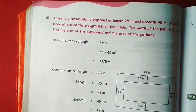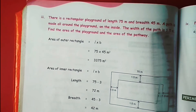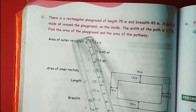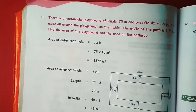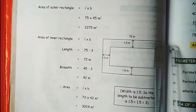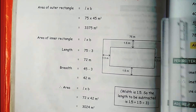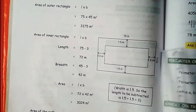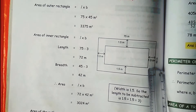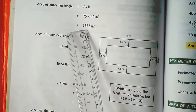Now we shall see the next sum. There is a rectangular playground of length 75 metres and breadth 45 metres. A path is made all around the playground on the inside, and the width of the path is 1.5 metres. Find the area of the playground and the area of the pathway. First, we find the area of the outer rectangle using length into breadth: 75 into 45 equals 3375 square metres.